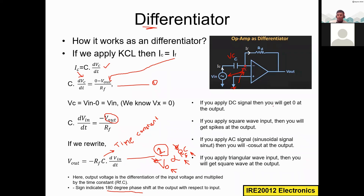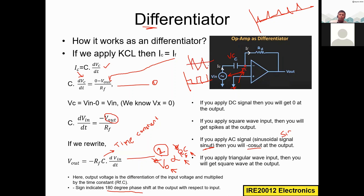If you apply a DC signal, you will get zero at the output — that is a key property of the differentiator. If you apply a square wave, you will get spikes at the output. If you apply a sinusoidal signal such as sine(ωt), you get −cos(ωt) at the output. If you apply a triangular wave at the input, you get a square wave at the output.